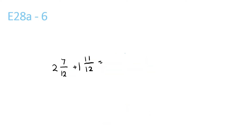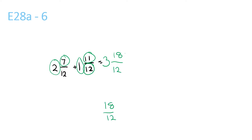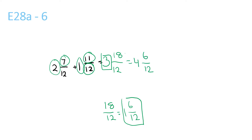For this question, we do the 2 plus the 1, which is 3. The 7 plus the 11, which is 18, over 12. 18 over 12 is just the same as 1 and 6 over 12. So we have 1 and 6 over 12 plus 3, which is just 4 and 6 over 12. This can be simplified to 4 and 1 over 2.